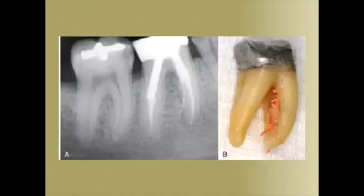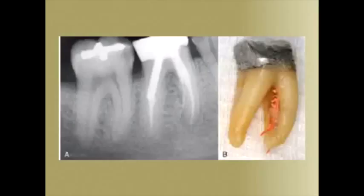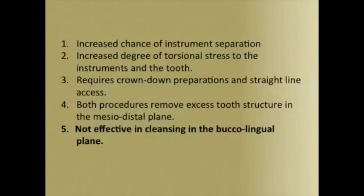One might look at the x-ray of this tooth and question the reasons for failure. However, upon extraction we can clearly see the defect that resulted from excessive removal of dentin mesiodistally, producing a strip perforation and difficulties in obturation. The latter part of this lecture is to show you how to avoid the excess removal of dentin while keeping the instruments 100% intact.